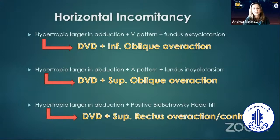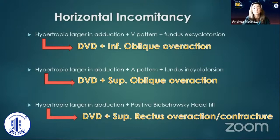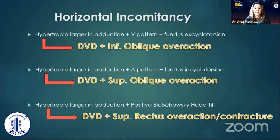Patients with superior oblique overaction and DVD will show hypertropia larger in abduction, an A-pattern, and fundus incyclotorsion. A larger hypertropia in abduction can also be found in patients with DVD and superior rectus overaction contracture syndrome. But in these cases, you will not have an A-pattern, and a fundus incyclotorsion can be seen.